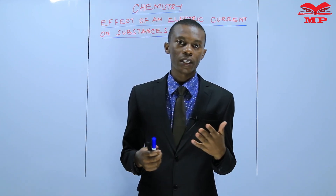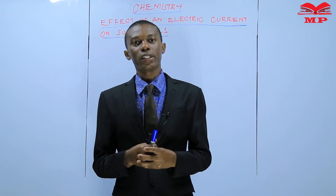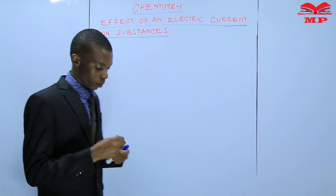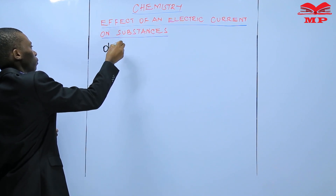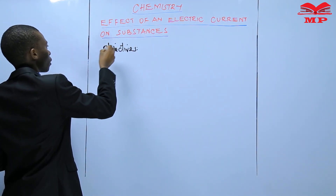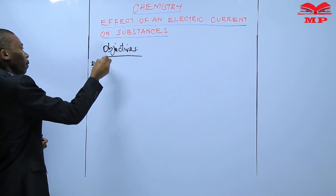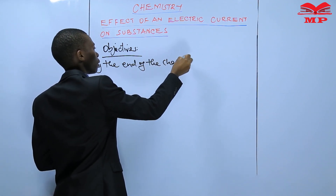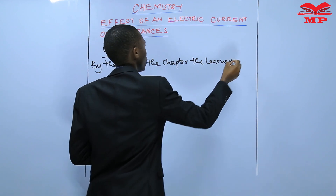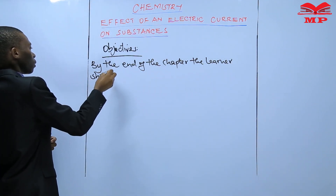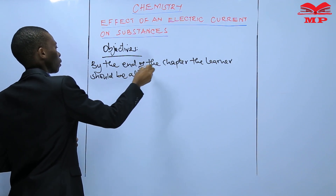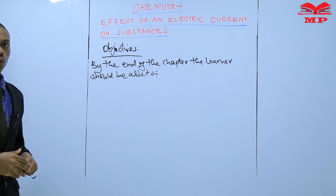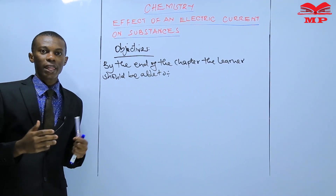I want to start by running you through the objectives so that you know what is expected in this topic. Therefore we start with the objectives. By the end of the chapter the learner should be able to — this is what you are expecting to know by the end of this chapter.